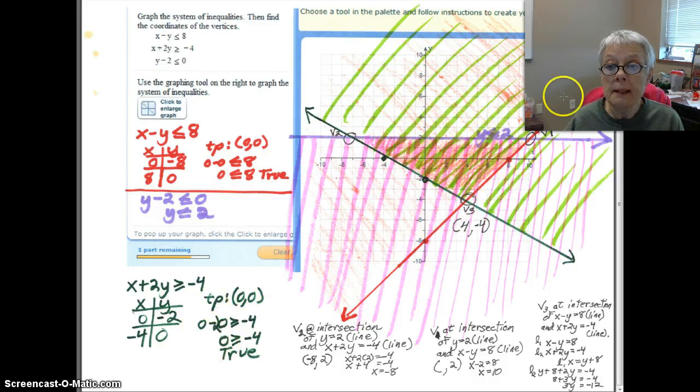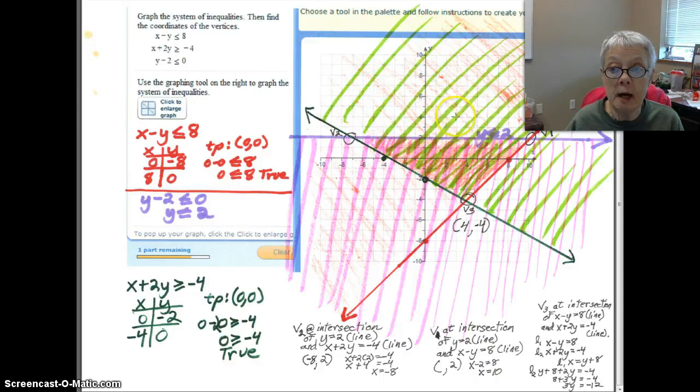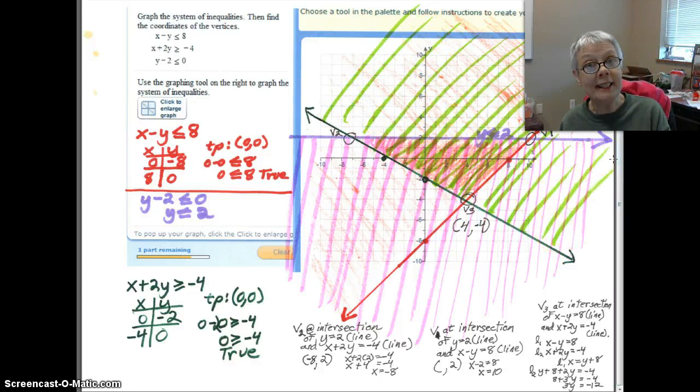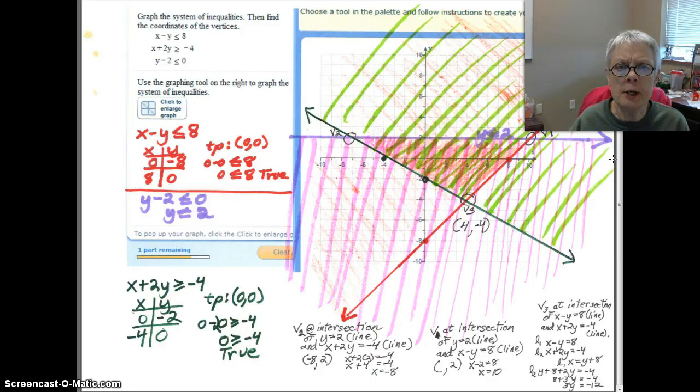So since 0, 0 gave me a true answer, there's 0, 0. I shaded on the 0, 0 side of the green line. I shaded in green. Slightly different shade though.